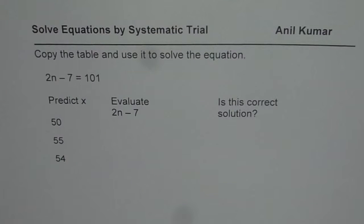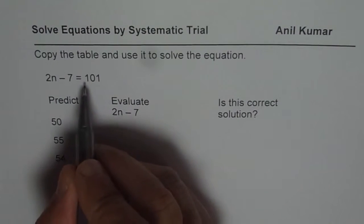I'm Anil Kumar and we will understand how to apply the systematic trials method to solve equations. Copy the table and use it to solve the equation 2n minus 7 equals 101.